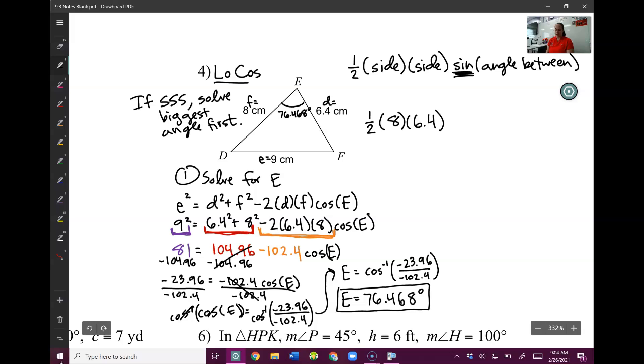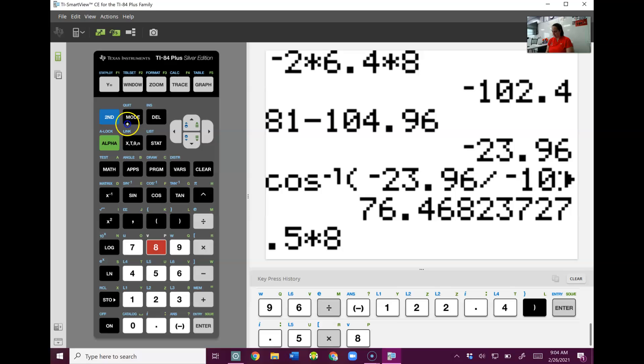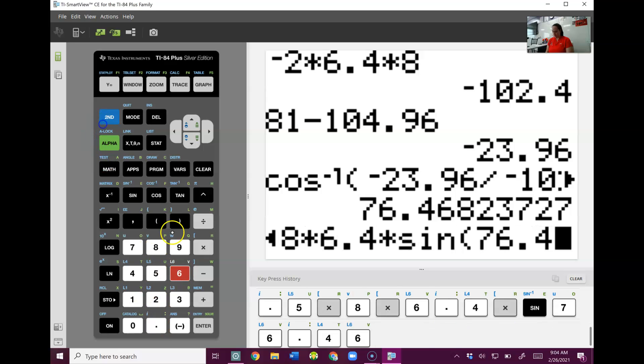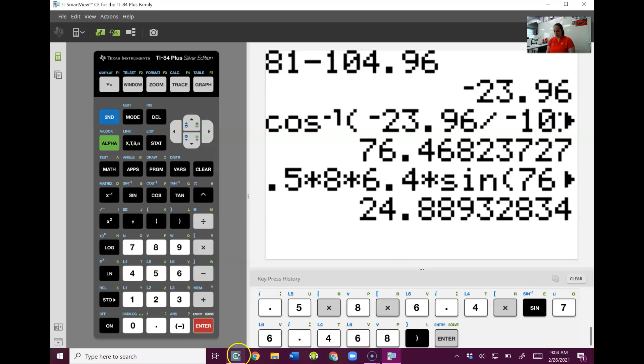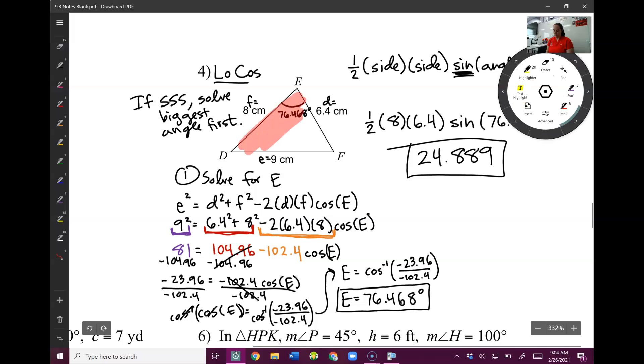That's a common mistake. Students may forget that sine is there. 76.468 degrees. If we type that in, 0.5 times 8 times 6.4 times sine of 76.468. And that's what we get for our final answer. That is the area of this triangle.